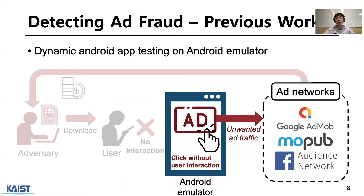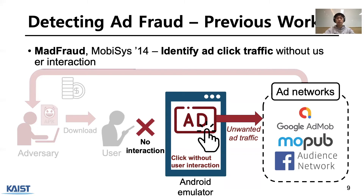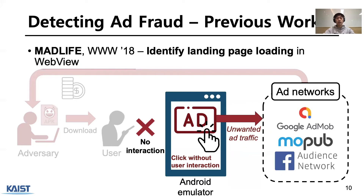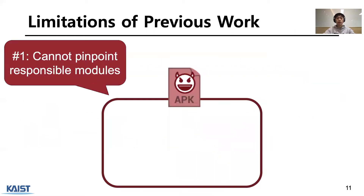There are two previous works that identify ad click fraud using a dynamic Android app testing system with an Android emulator. Dynamic means they execute the target app and detect ad fraud based on observed app behaviors. MAD Fraud found click fraud by detecting ad click traffic in an environment without user interaction. MAD Life identified that the ad landing page is automatically loaded in an ad WebView.